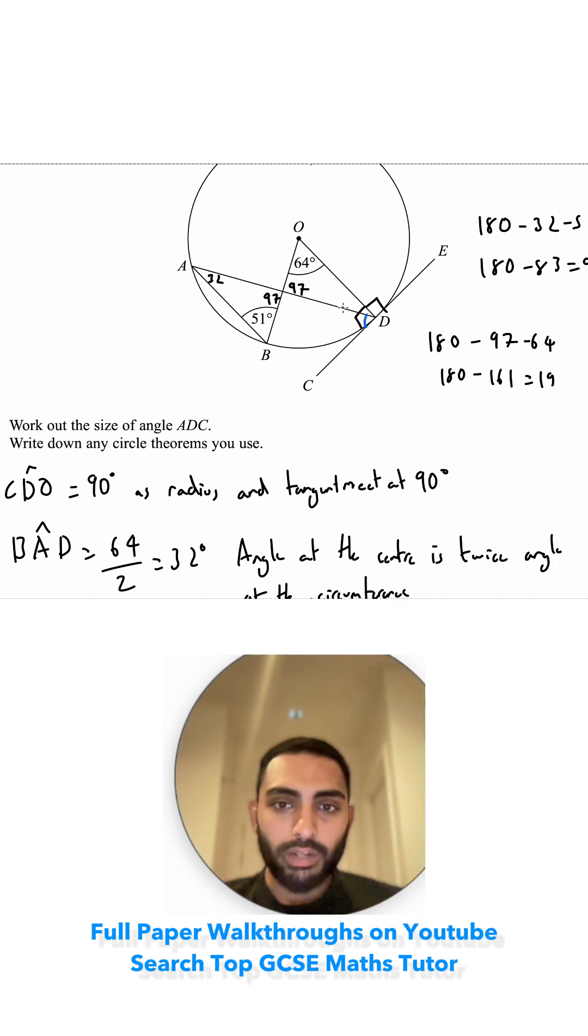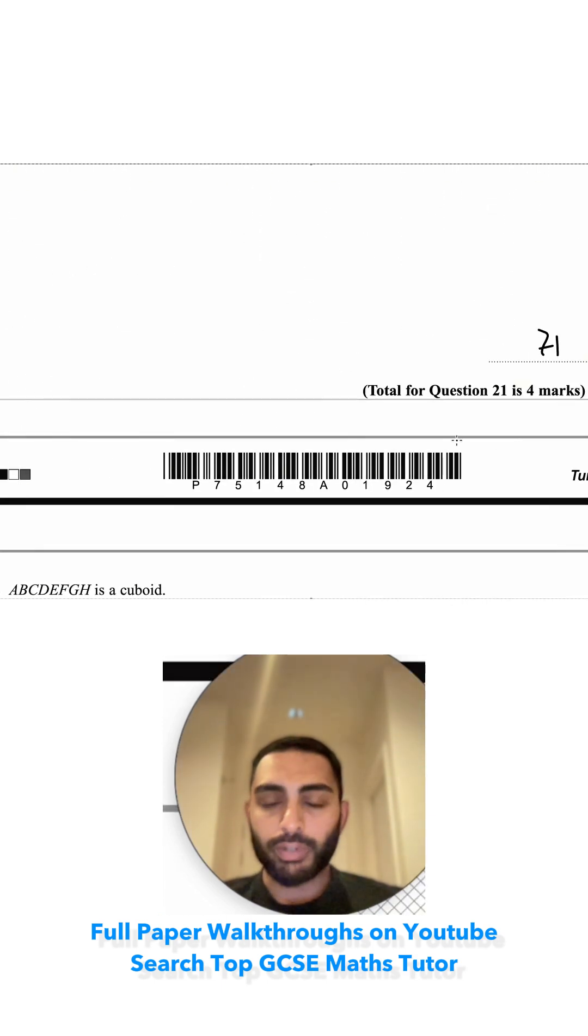This small angle in that triangle is 19 degrees. And that other angle, the blue angle will add up to make 90. So I need to do 90 minus 19 which would be 71. So that final angle, the one we're looking for is 71 degrees.